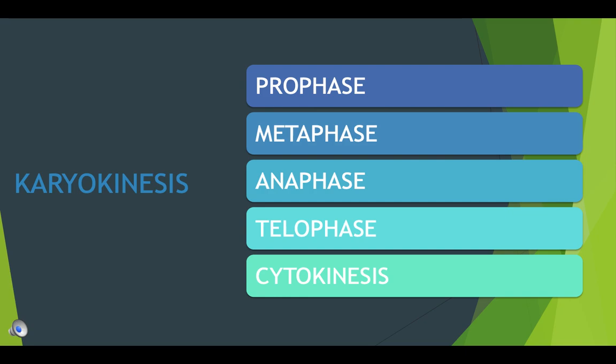Mitosis takes place in four stages: prophase, metaphase, anaphase, and telophase.